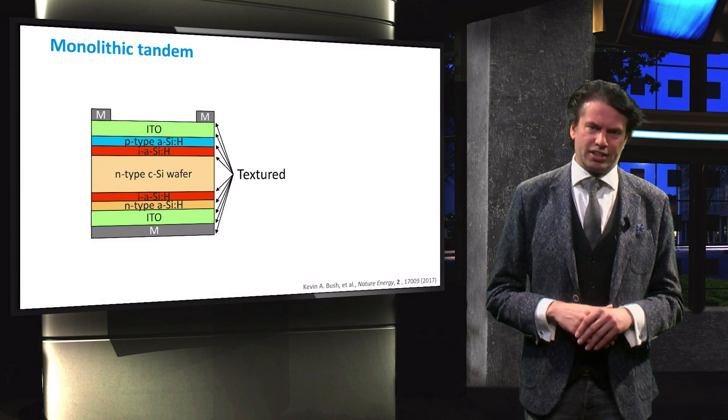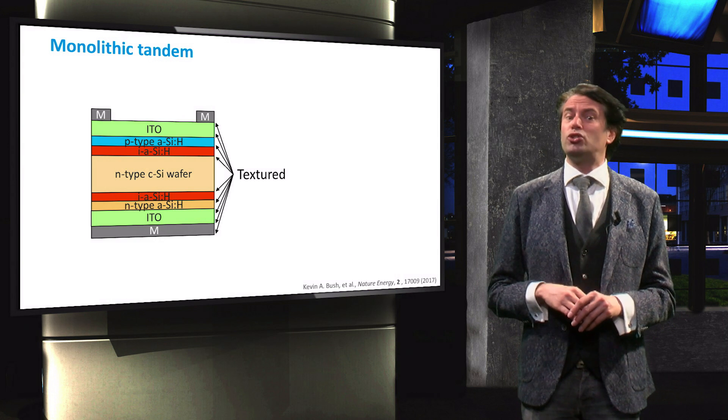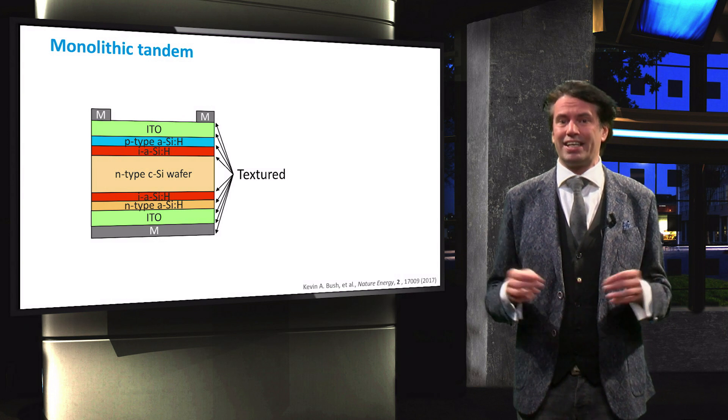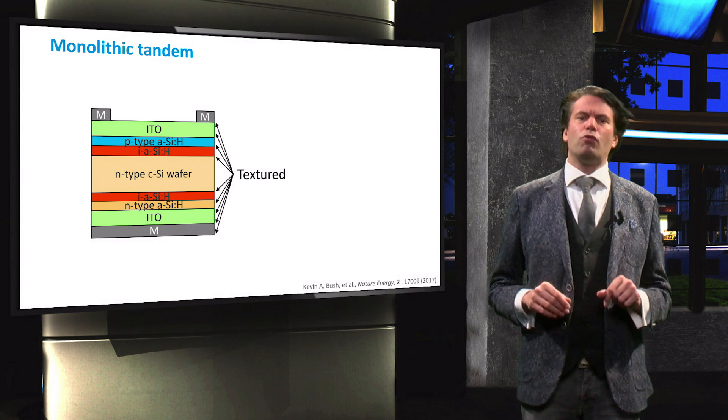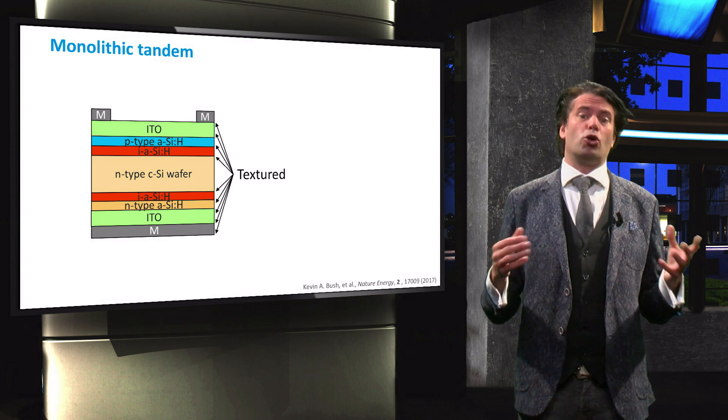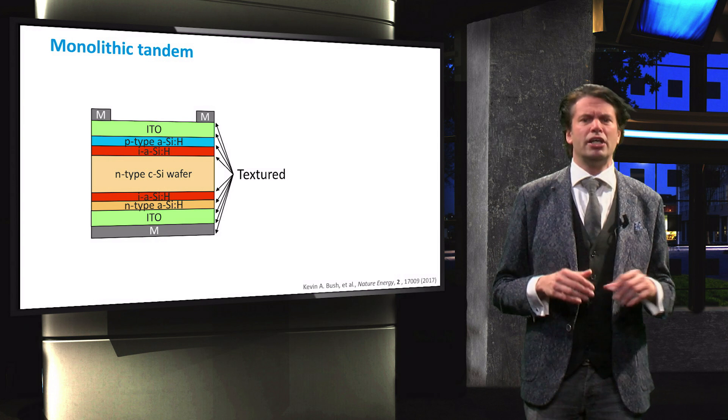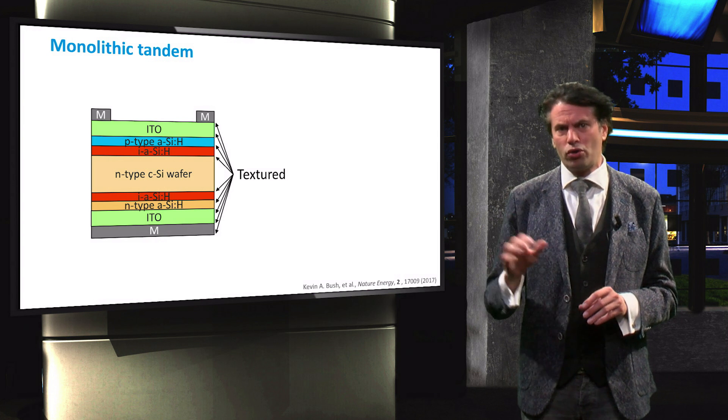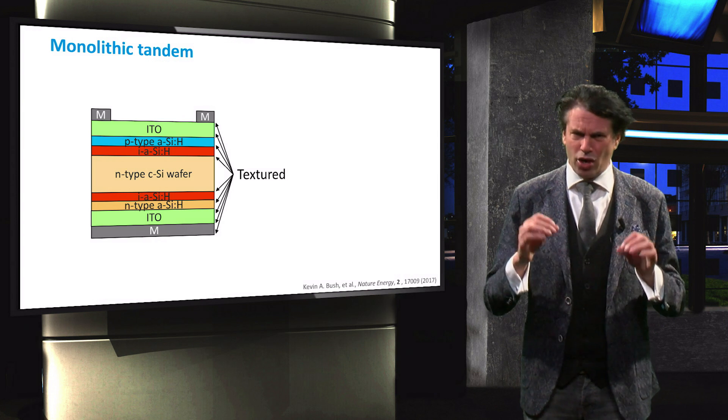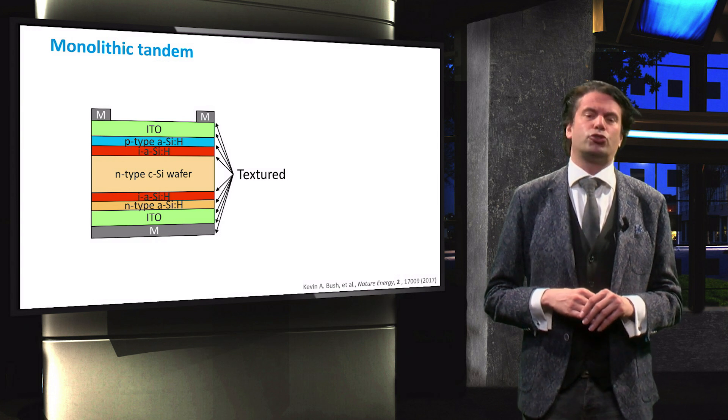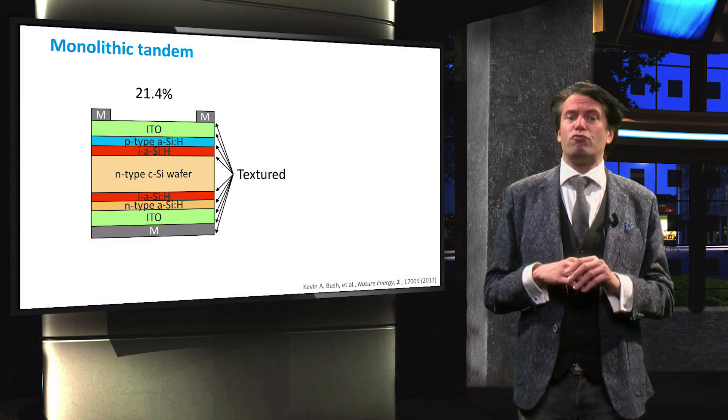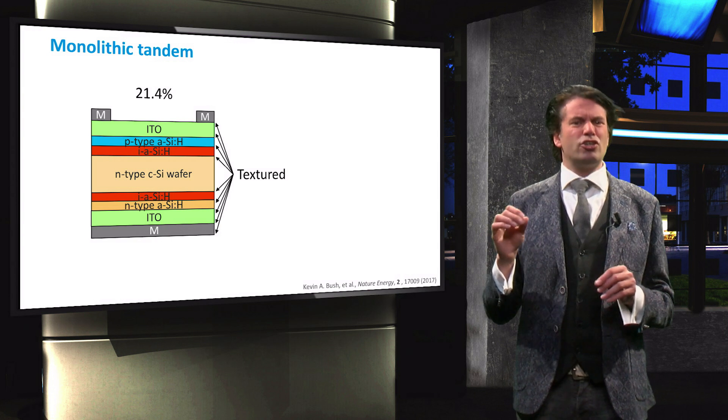Now let's look at the state of the art devices. We will start with the two terminal hybrid. This device has a modified silicon heterojunction bottom cell. This cell works well in a tandem configuration, since the parasitic absorption of high energy photons in the amorphous silicon passivation layer is no longer an issue. This is because the high energetic photons are already absorbed by the perovskite top cell. The heterojunction has an efficiency of 21.4% as a single junction.